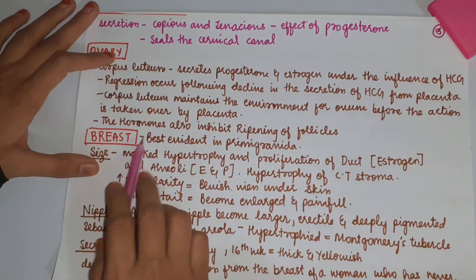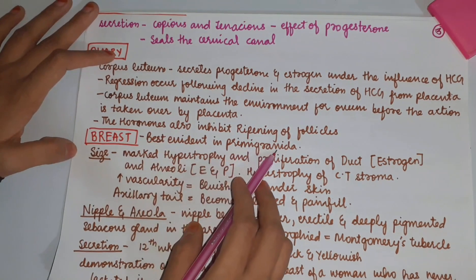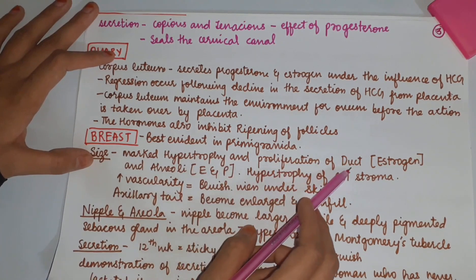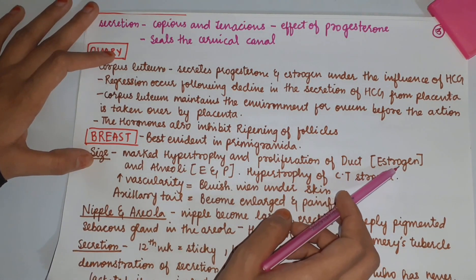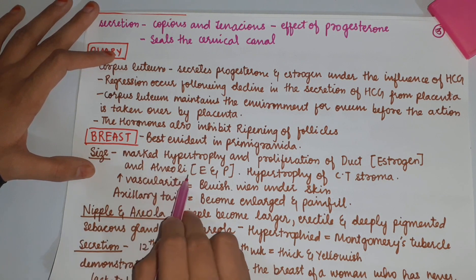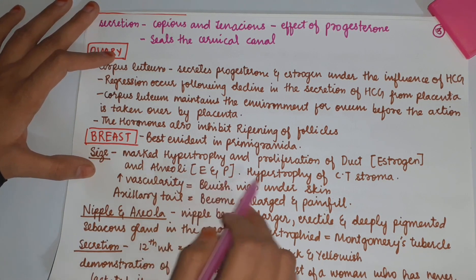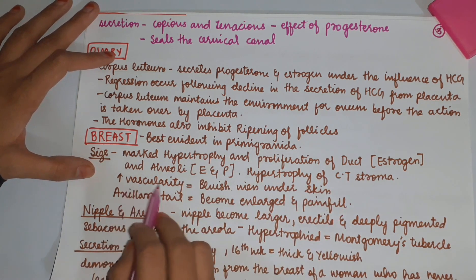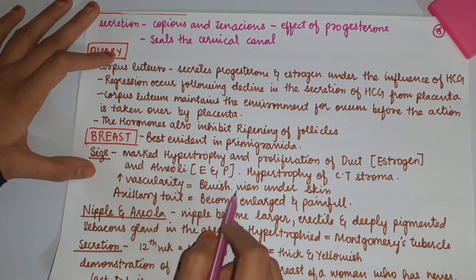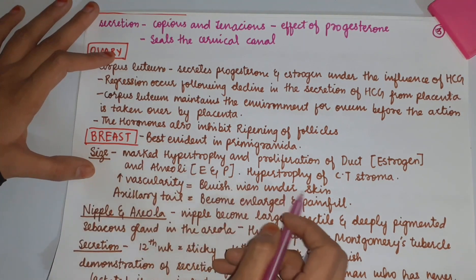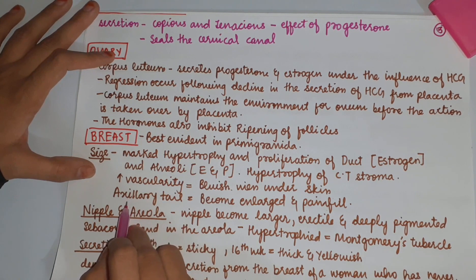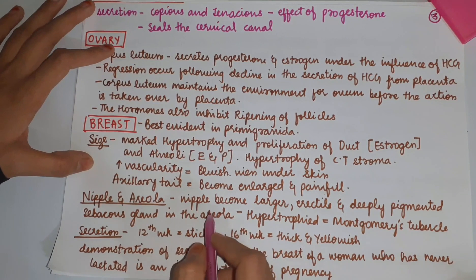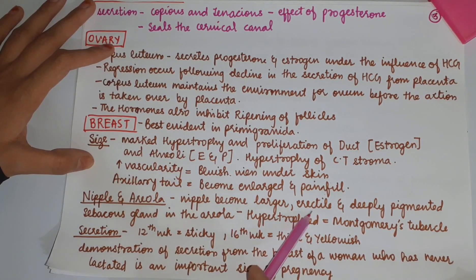Changes in the breast are best evident in a primigravida. There occurs marked hypertrophy and proliferation of ducts under the influence of estrogen. Changes in the alveoli take place under the influence of estrogen as well as progesterone. There occurs hypertrophy of the connective tissue stroma. Increased vascularity gives bluish veins under the skin. The axillary tail becomes enlarged and painful. The nipple becomes larger, erectile, and deeply pigmented.